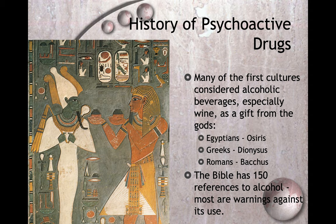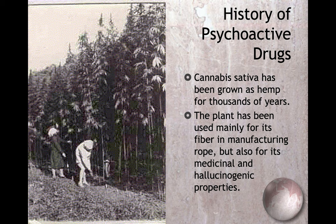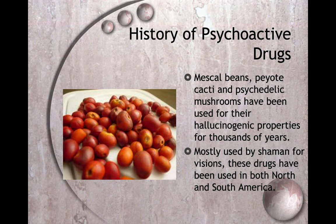The Bible has 150 references to alcohol, and most of them are warnings against using it — but that didn't stop people, even religious people, from getting drunk. Opium has been cultivated in the civilized world for over 6,000 years. In ancient Egypt 5,000 years ago, opium was used to treat mental illness and to quiet crying babies — get your baby stoned so they stop crying. Cannabis sativa has been grown as hemp for thousands of years, mainly for its fiber and manufacturing rope, but also for its medicinal and hallucinogenic properties.